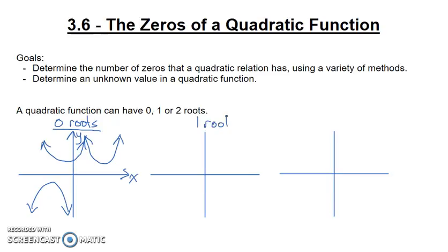One root has its vertex directly on the x-axis. So an example might look something like this, or something like this.